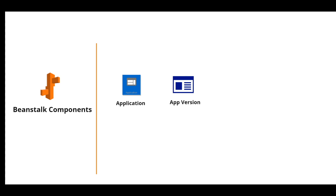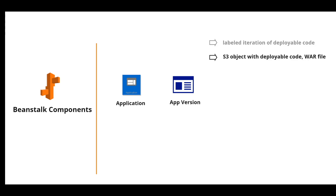The next component is Application Version. For example, you deployed your code and it's running, but now you want to make a change. You make the change and launch it in Elastic Beanstalk — now you have two versions of the code. An application version refers to a specific labeled iteration of the deployable code for a web application. These are stored in an Amazon S3 bucket, and the application version points to the S3 bucket containing the deployable code, such as a Java WAR file.